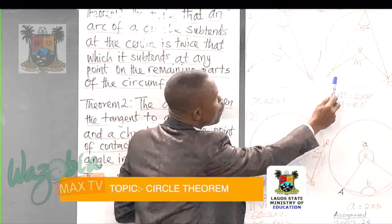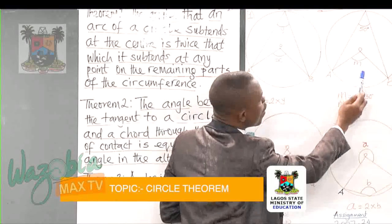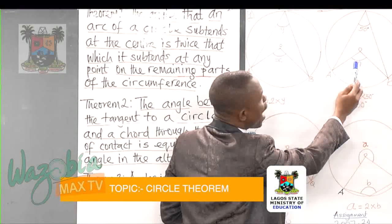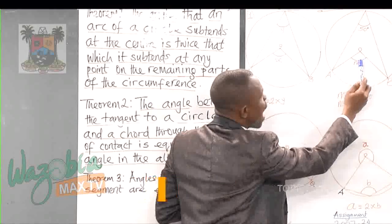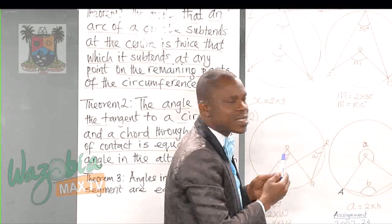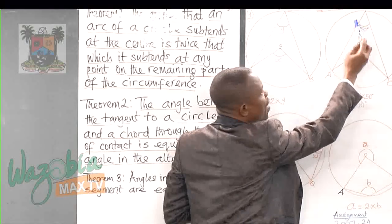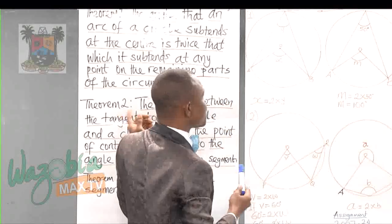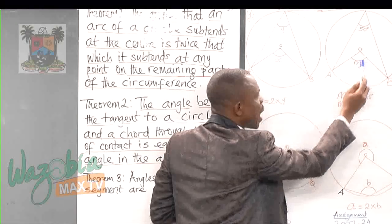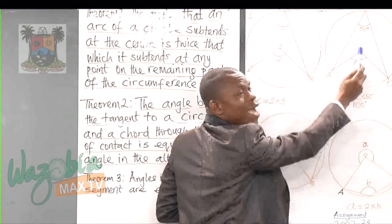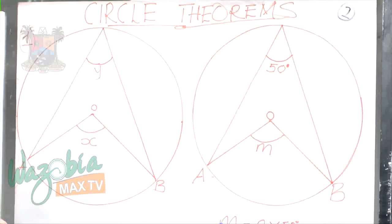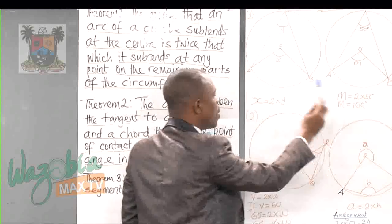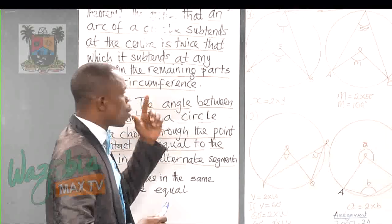For example, if you have a question like this and you are asked to find M: the angle at the circumference is 50 degrees, and the theorem says the angle at the center, which is M, will be twice that at the circumference. That is 50. So M equals 2 times 50, and the answer will be 100 degrees.